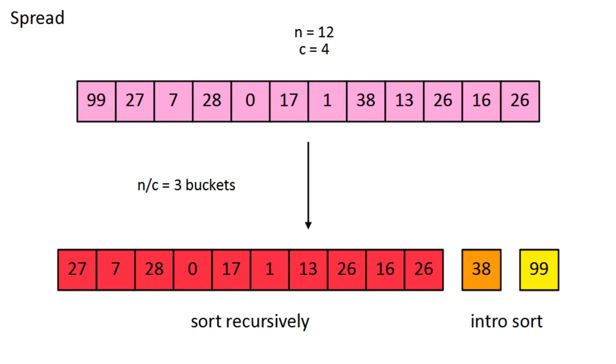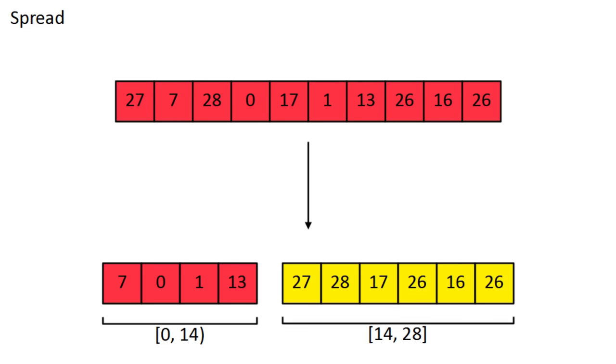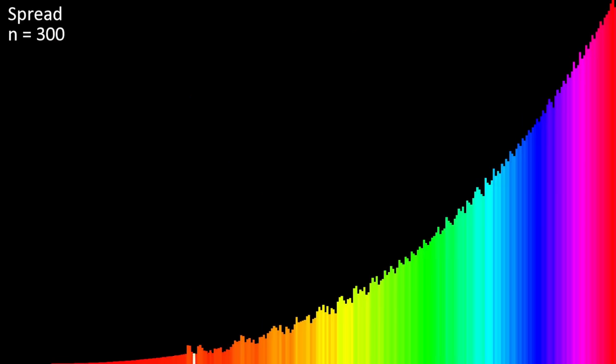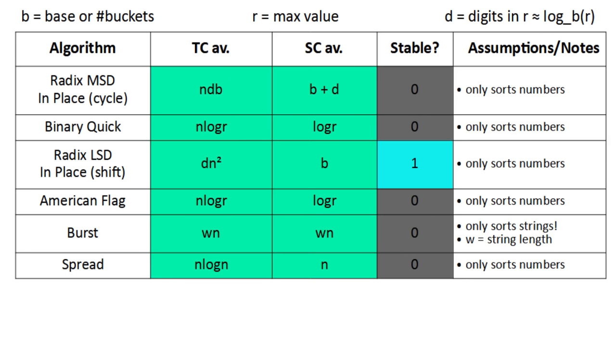Uneven buckets are often caused by outliers, so once those are gone, the buckets will become more uniform. Spread sort also has a lot of adaptive features that give it a best case time complexity O of n and worst case N log N.